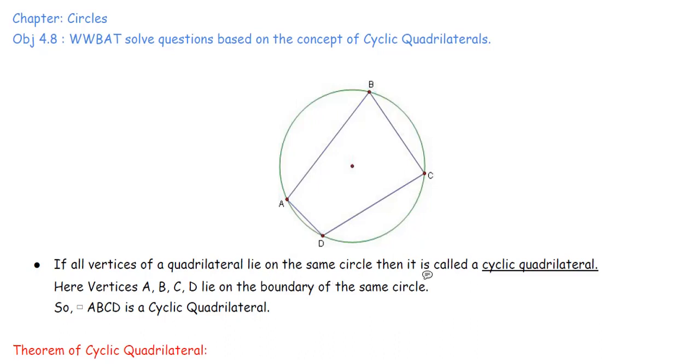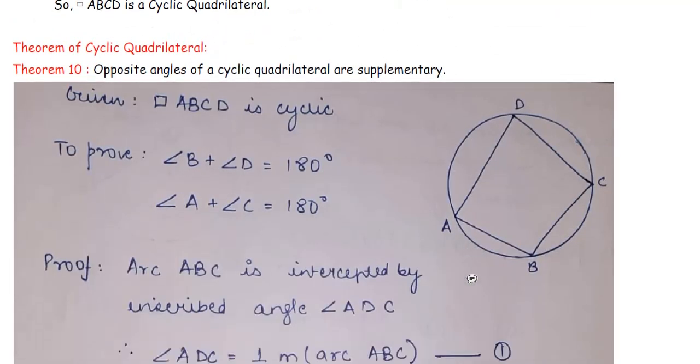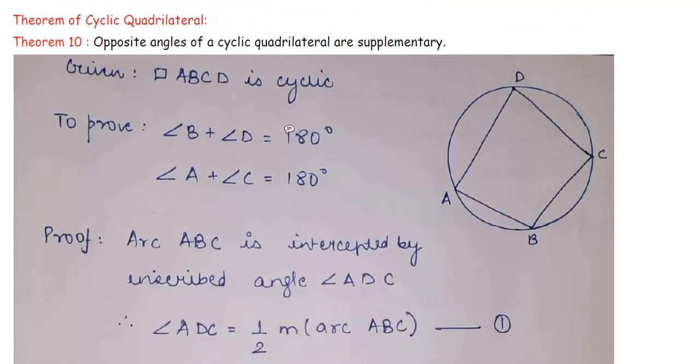So, you can see the definition written over here. Make sure that you are pausing the video and writing everything down. Now, cyclic quadrilateral has a special theorem, a special property. What is that? It says, opposite angles of a cyclic quadrilateral are supplementary.